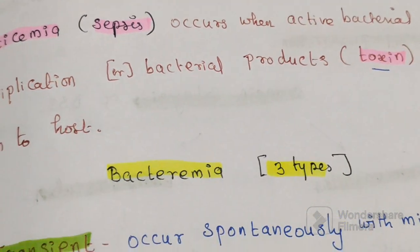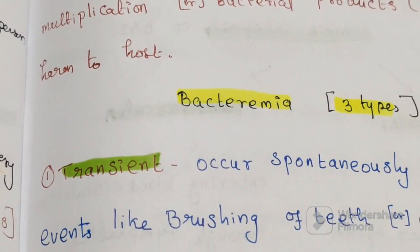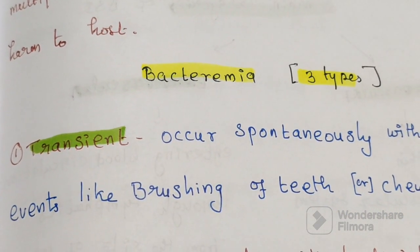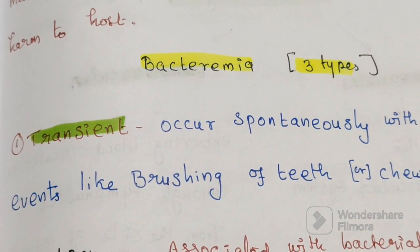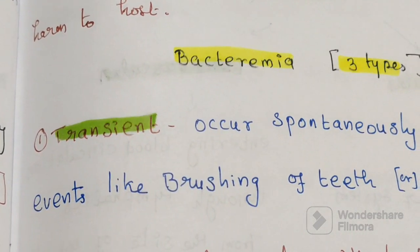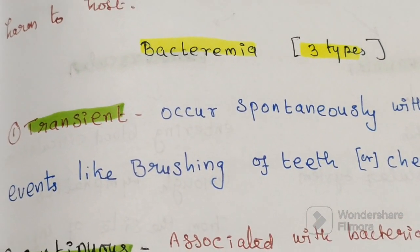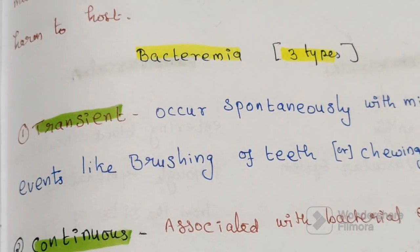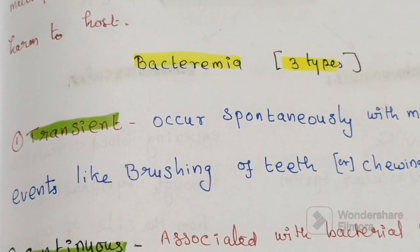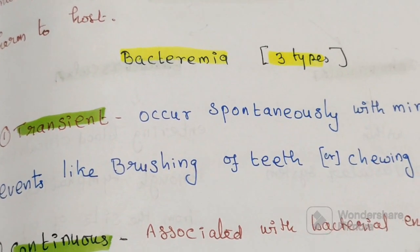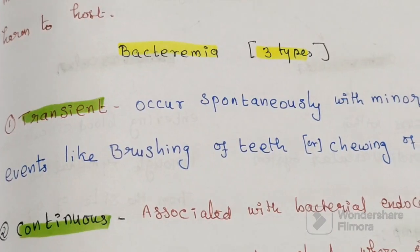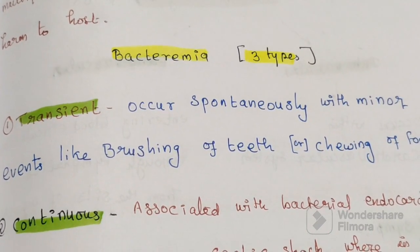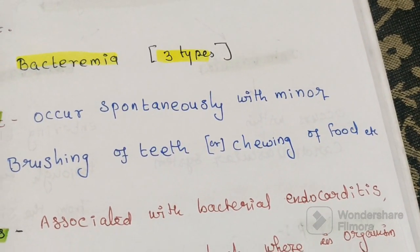Bacteremia is classified into three categories. The first one is transient bacteremia, the second is continuous bacteremia, and the third is intermittent bacteremia. Transient bacteremia may occur spontaneously with minor events like brushing of teeth or chewing of food.